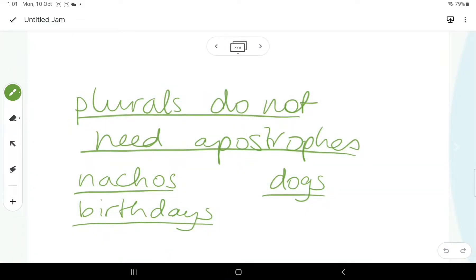Now, just talking about plurals, when we're talking about plural things, they do not ever need apostrophes. So, if you see nachos on the menu, it's just nachos. Birthdays, many in the month, doesn't matter. Birthdays, no apostrophe. Dogs, the same thing. You get the idea. Don't use an apostrophe where you don't need one.